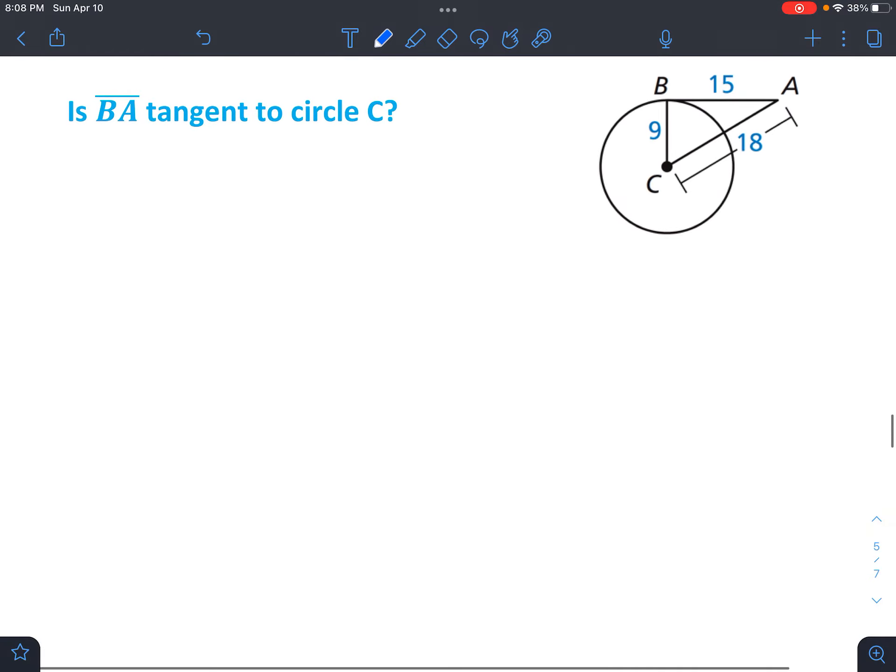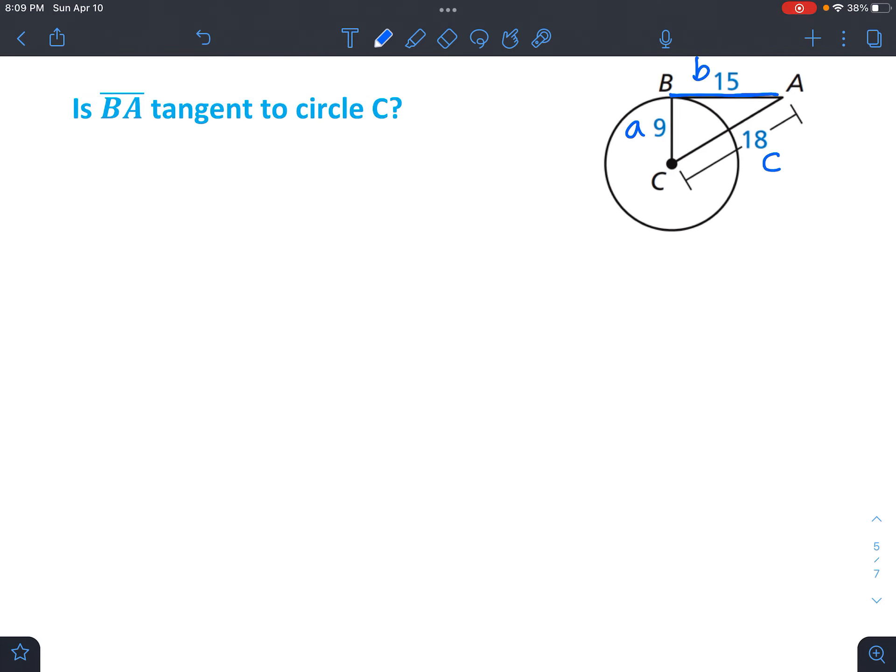Okay, let's try that again. That's kind of a lot of steps. So this time we're wondering if BA, this segment right here, is tangent to circle C. Notice that this has to be C because 18 is the largest side. We'll call this A and this B.